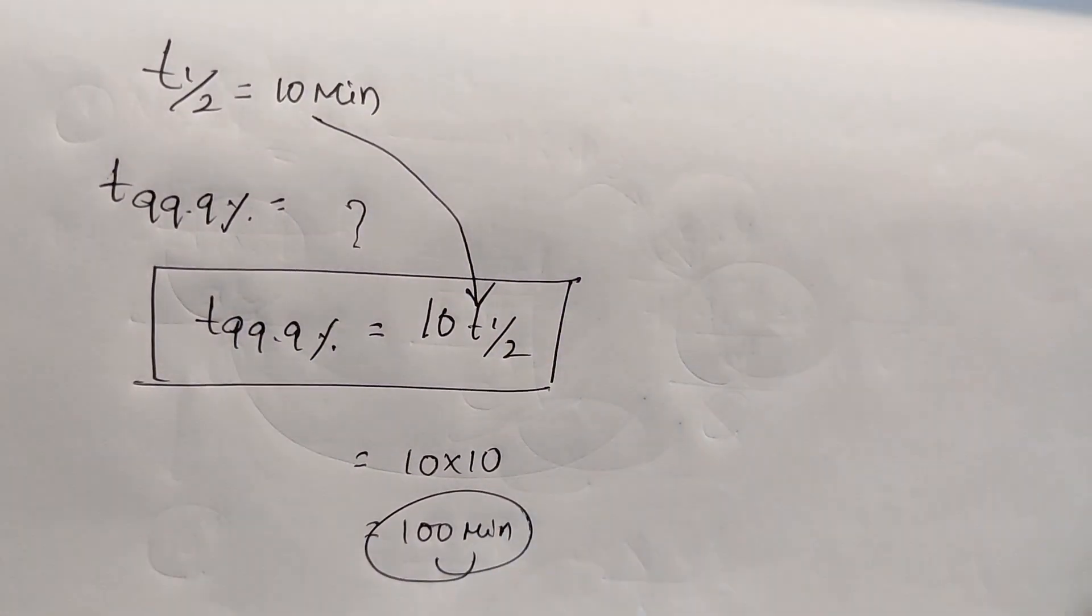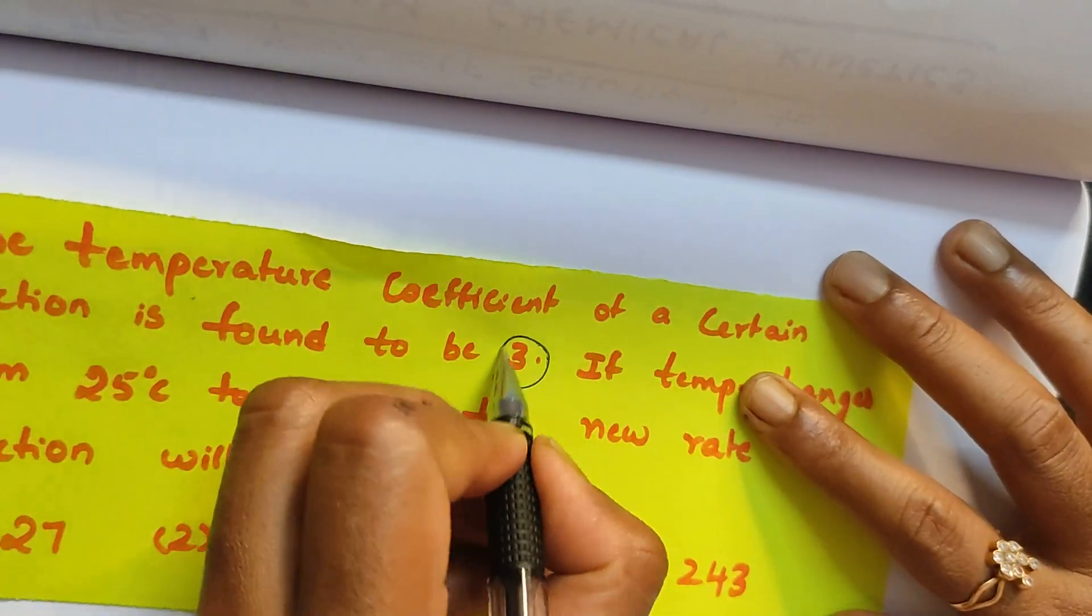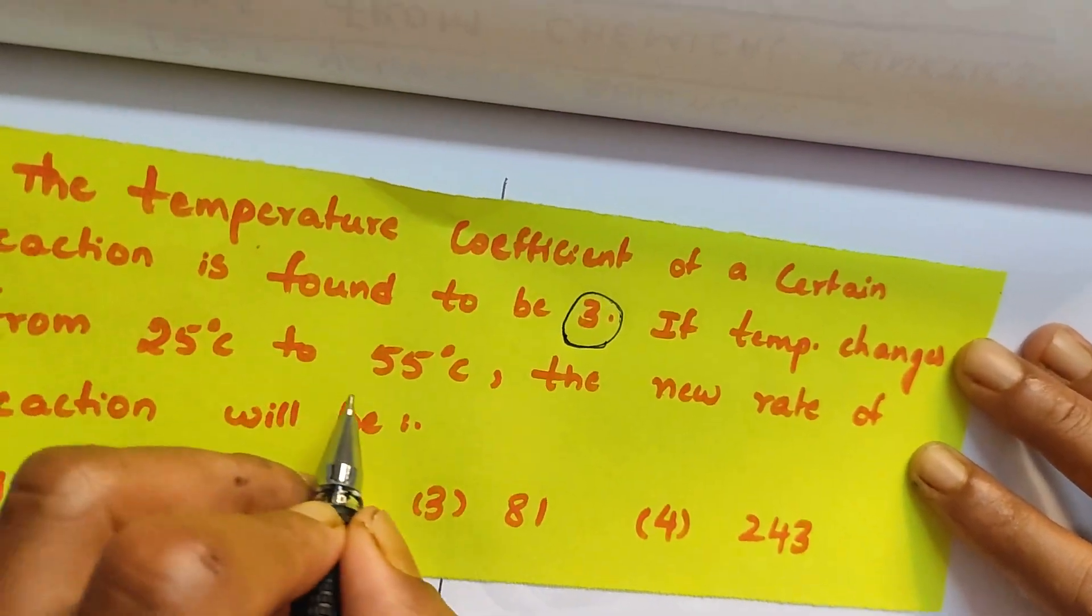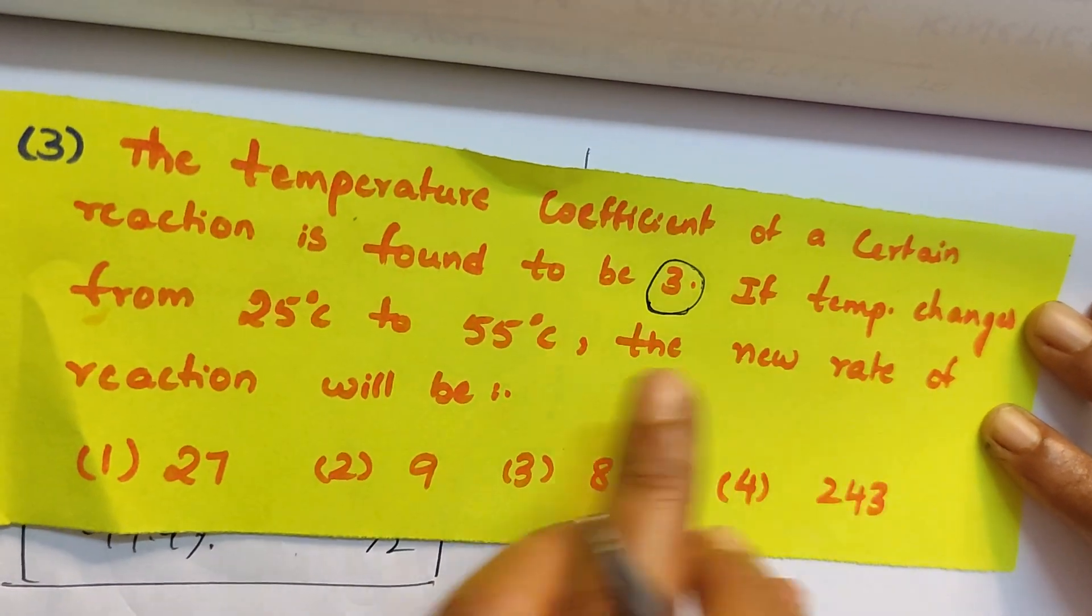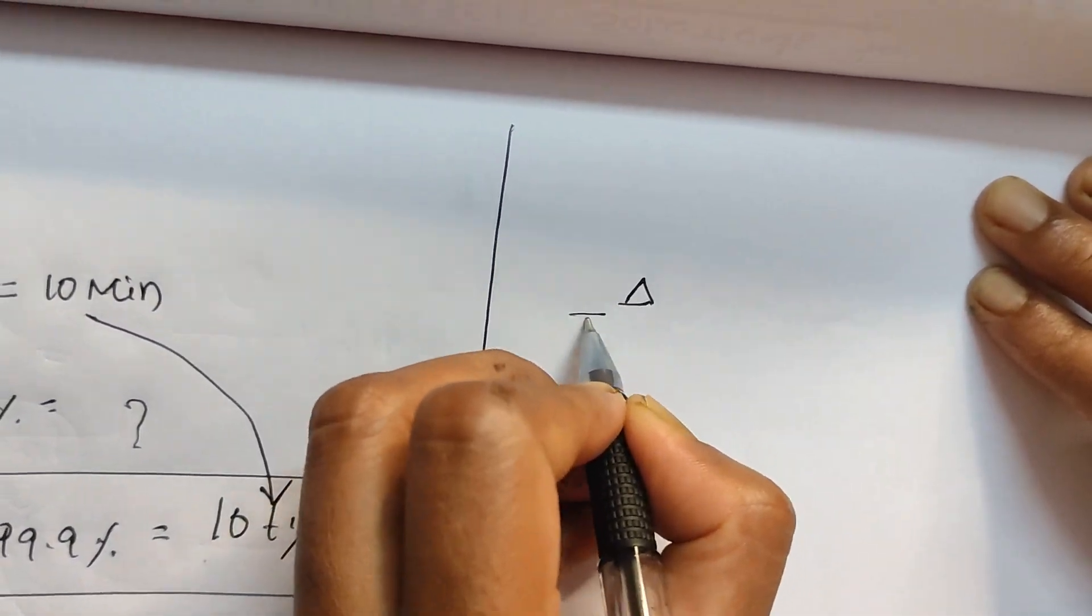Now let's see question number 3. Temperature coefficient of a certain reaction is given 3. So temperature coefficient is 3, and the temperature changed from 25 to 55 degrees Celsius. They're asking the new rate of the reaction.